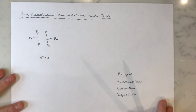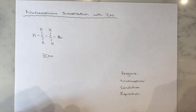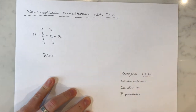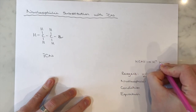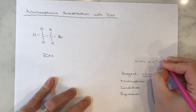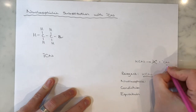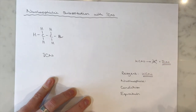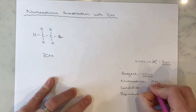Let's look at nucleophilic substitution using a cyanide ion. The reagent here is potassium cyanide, KCN. When potassium cyanide dissolves in solution, it splits up into a K⁺ ion and a CN⁻ ion. The potassium ion is our spectator ion — we just ignore that. The cyanide ion, which has a negative charge and a lone pair of electrons on the carbon, is going to be our nucleophile. So KCN is our reagent; CN⁻ is our nucleophile.